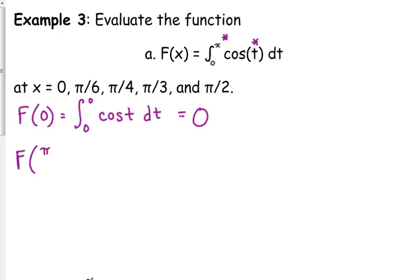Next one, not so lucky. F of π over 6 is the integral from 0 to π over 6 of the cosine of t dt. To figure this out, we'll need to anti-differentiate cosine. We just did it a second ago. It is sine.